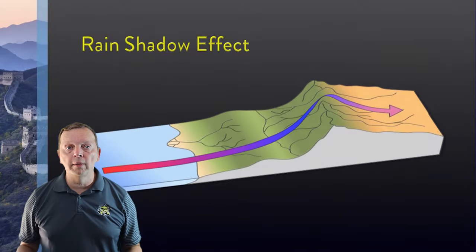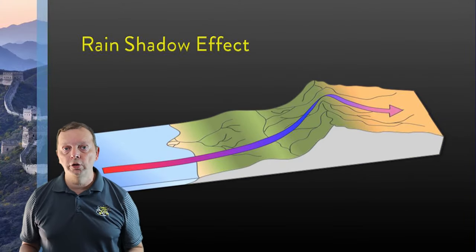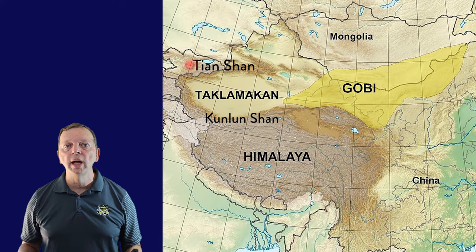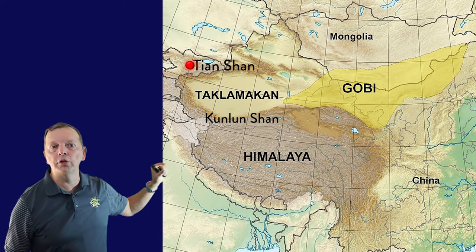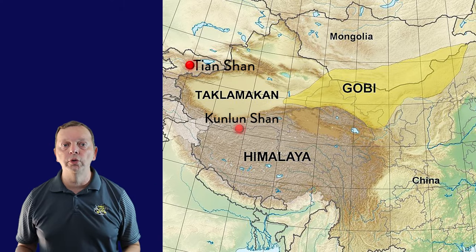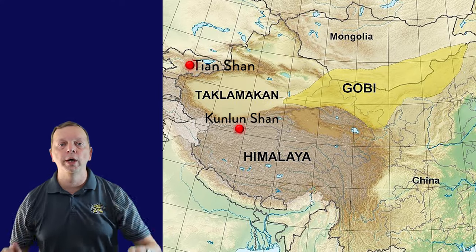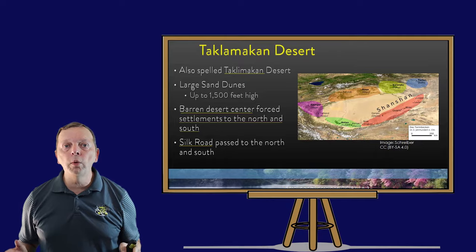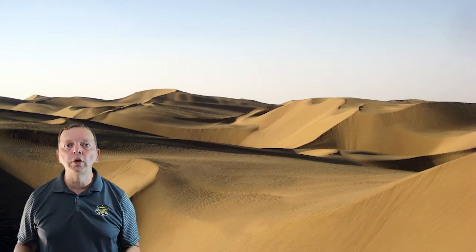The impact of these mountains is not only to serve as obstacles that largely isolated East Asia, but through the rain shadow effect, they have created two major deserts: the Gobi Desert and the Taklimakan Desert. The Taklimakan Desert is nestled between the Tian Shan Mountains and the Kunlun Shan to the south, both of which block precipitation from entering. The desert features some of the largest sand dunes in the world, rising up to 1,500 feet high.